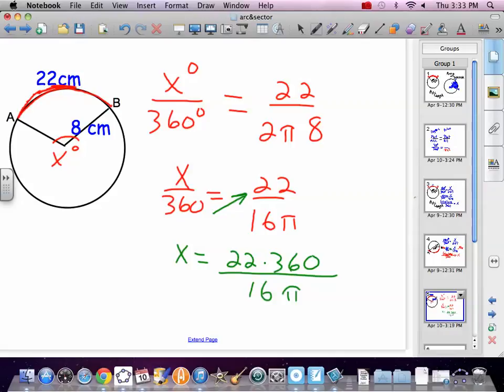Now, some of you are going to have trouble with this one. Because there's actually two things in the denominator. 16 and a pi. You've got to figure out the best way for you to deal with that. I tend to divide by 16 and then divide by pi. So 22 times 360 equals some number. Divide by 16 equals some number. Divide by pi equals. And I come up with 157.56 degrees.